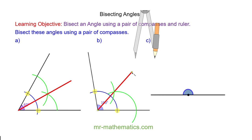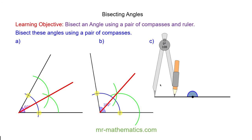For question C we're going to bisect a straight line. This is slightly different. To begin we place the pin on the end of the line and we open up our compasses to greater than half the length of the line.